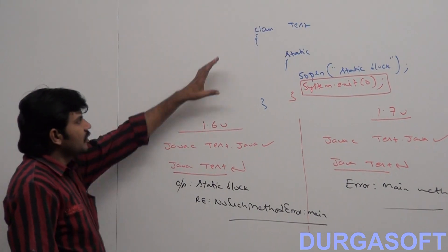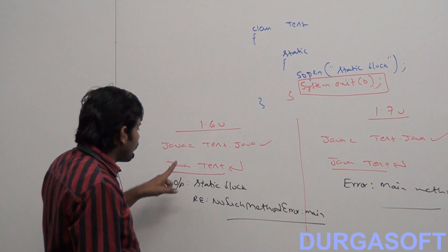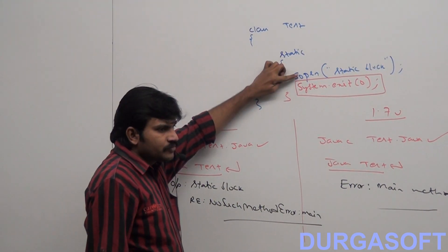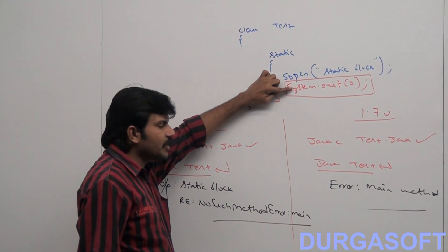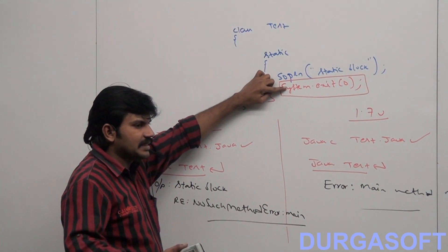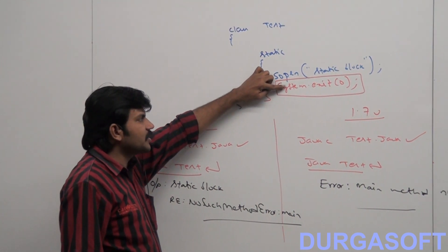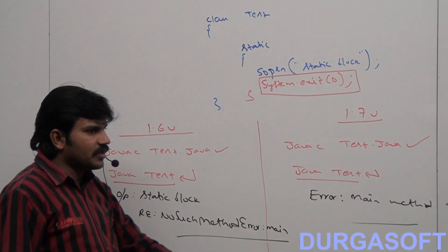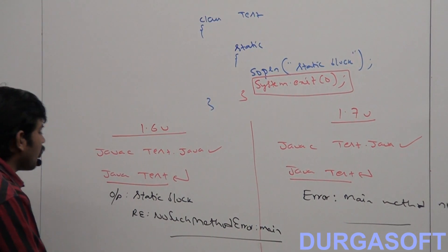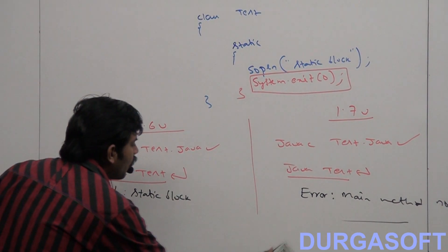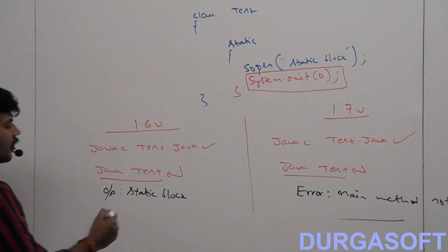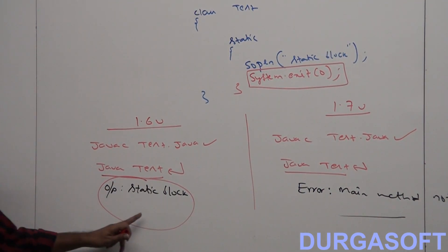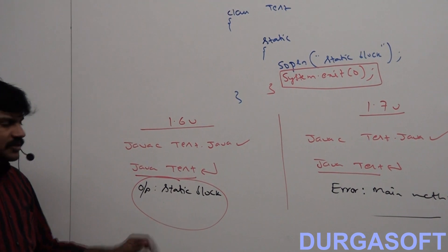The code compiles fine. Now I am trying to execute it. In 1.6 version, the static block executes and hits System.exit(0). System.exit(0) means JVM itself is going to shut down, and JVM won't search for the main method. That is why the output will be only 'static block' — there is no question of any exception.